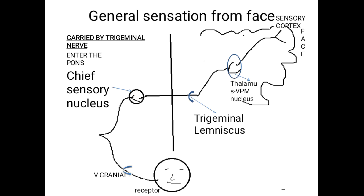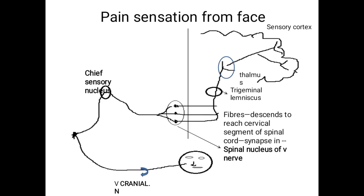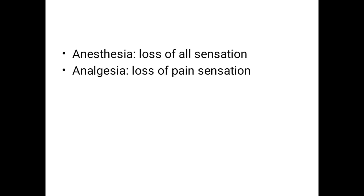General sensation from the face is different from the ascending tracts discussed. Touch, temperature, and pain sensation from the face are mainly carried by the trigeminal nerve. The pathway is different from the spinal ascending tracts.